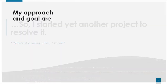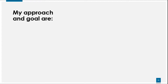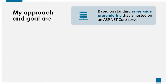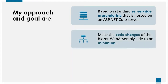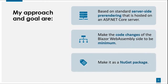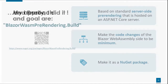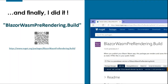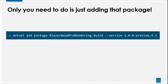Let me talk about my approach and goals for statically pre-rendering a Blazor WASM in my way. First, it is based on standard server-side pre-rendering hosted on an ASP.NET Core server — required to avoid the async initialization problem. Second, make the code changes of the Blazor WASM site nothing or minimum, which is important for ease of use. Third, it should be packaged as a NuGet package and distributed on NuGet.org so anybody can use it out of the box. After a few days, I published my achievement as a NuGet package called Blazor WASM Pre-Rendering Build. All you need to do is add this package to your Blazor WASM project.